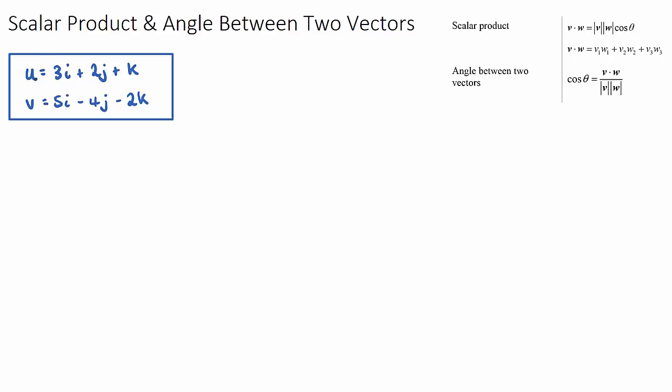I've given you two vectors, vector u and vector v here. Vector u and vector v are both in i, j and k form. If you wanted to put them in column form, you could. So vector u is also 3, 2, 1 and vector v would be 5, negative 4 and negative 2. Now I'm going to find the scalar product of these two vectors and I will find the answer first and then we'll explain what it means and how it relates to these topics.